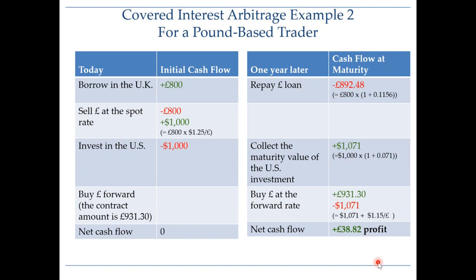As a result, you have a profit of 38.82 pounds. The sequence of transactions is the same — the only difference is how many pounds you agree to buy forward, which depends on whether you're a pound-based trader or a US-based trader. As a pound-based trader, you make 38.82 pounds of profit, and again this is guaranteed profit.